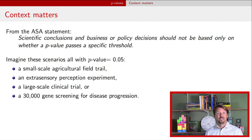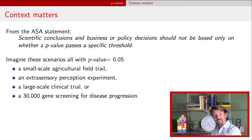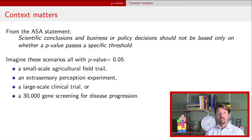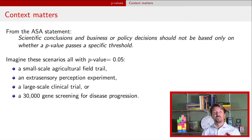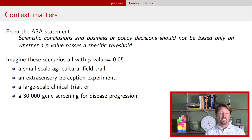I've heard that in physics the threshold is 0.001 — I'd be curious in the comments if anyone in physics can confirm that's standard. Now, statisticians watching may point out that we have solved some of these problems: there are multiple comparison adjustments for the genetic screening example, Bayesian approaches for the extrasensory perception experiment, and so forth. Statisticians have definitely addressed these issues. My point is that a standard approach of p-value less than 0.05 means reject is not sufficient — you need to know the context to properly interpret what that p-value means.